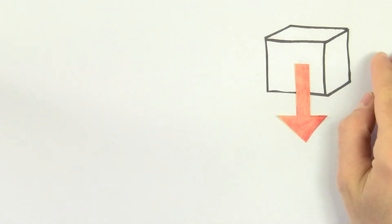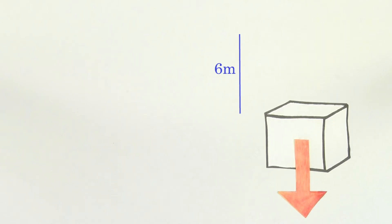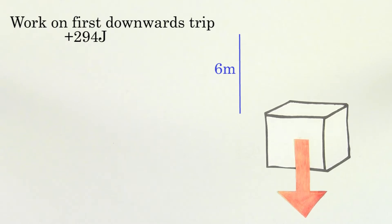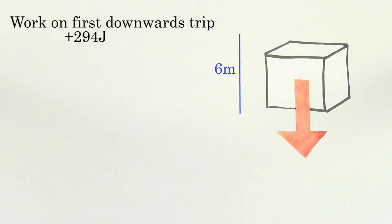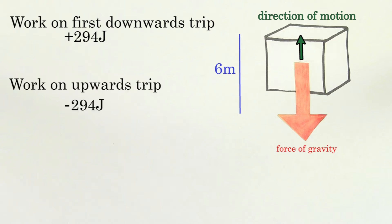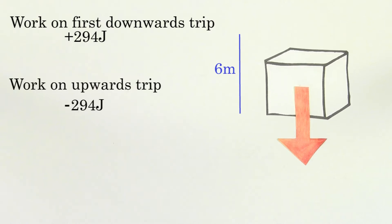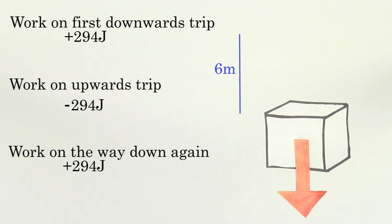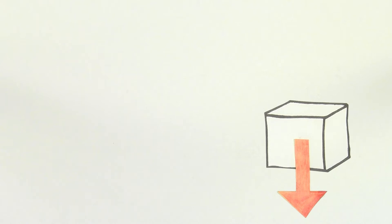Now let's start over. Say the mass again moves down six meters, but then it moves up six meters, then down again six meters. The work done by gravity for the first downwards trip was 294 joules. Then for the upwards trip, since the gravitational force is pointing in the opposite direction of the motion of the mass, the work done by gravity is going to be negative 294 joules. Then for the last trip downwards, the work again is positive 294 joules. That means the total work done on the mass from gravity is still 294 joules, just like it was when the mass was lowered only once. In other words, the work done by the gravitational force doesn't depend on the specifics of the path taken by the mass — it only depends on the initial and final position of the mass.